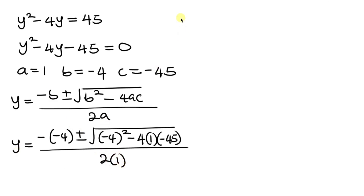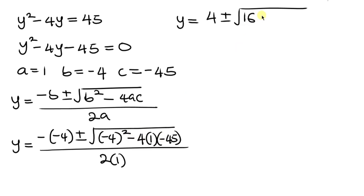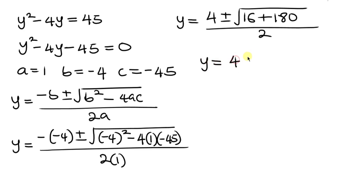Simplifying further, negative times negative makes positive, so we have positive 4 plus or minus the square root of: negative 4 squared is 16, and this negative times this negative becomes positive, so 4 times 45 is 180. We have 16 plus 180, all over 2. Simplifying further, y equals 4 plus or minus the square root of 196, all over 2.